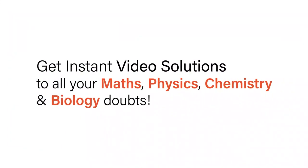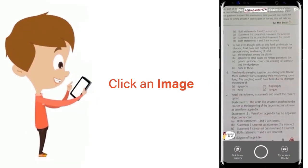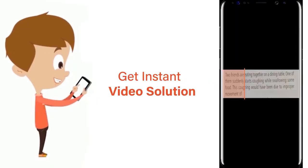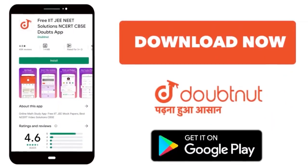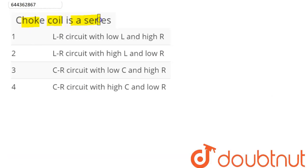With Doubtnet, get instant video solutions to all your maths, physics, chemistry, and biology doubts. Just click the image of the question, crop the question, and get instant video solution. Download Doubtnet app today. Question is: choke coil is a series LR circuit.